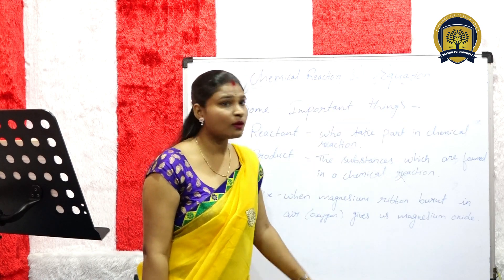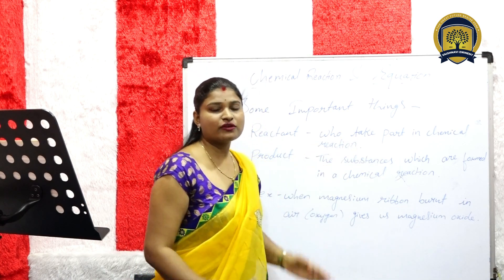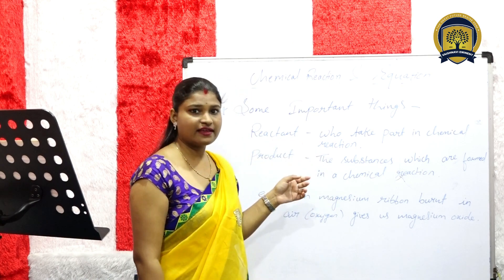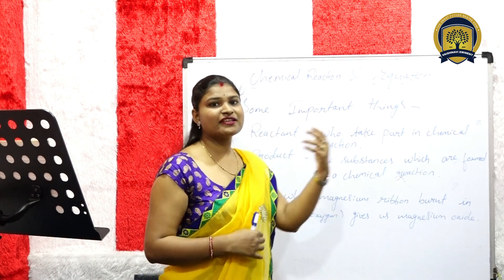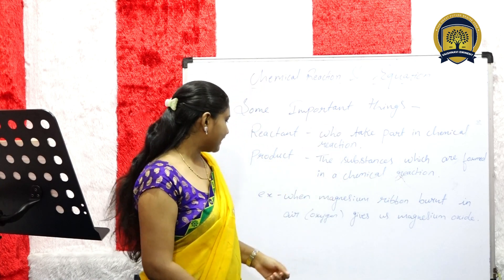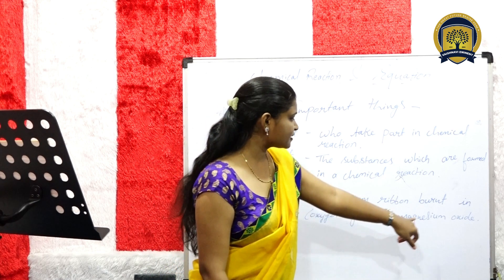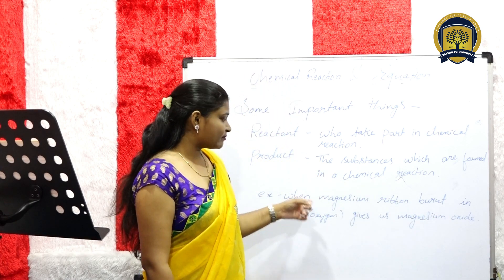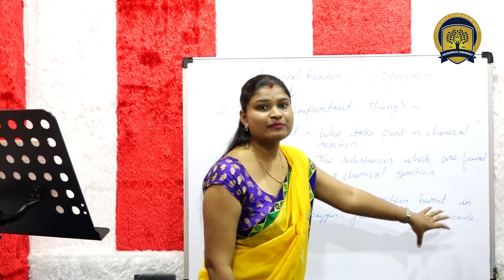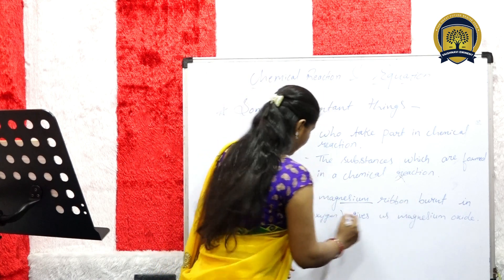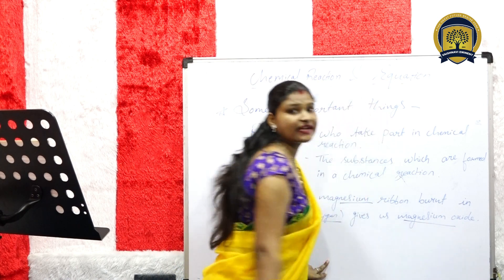Some important things you should know: What is a reactant? A reactant is a substance that takes part in a chemical reaction. What is a product? The substance which is formed in a chemical reaction. For example, when we have magnesium ribbon in the presence of oxygen, we get magnesium oxide. Here, magnesium and oxygen will be the reactants and magnesium oxide will be the product.